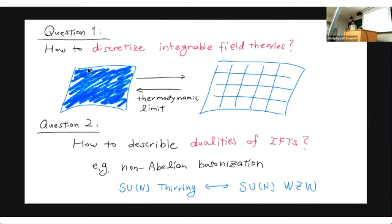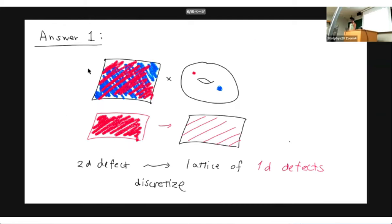Question two is that integrable quantum field series are known to have many dualities — for example, the prototypical example is the Ising model and the minimal model. How do we describe these dualities between integrable quantum field theories in the four-dimensional Chern-Simons framework? It turns out these two questions are closely related.